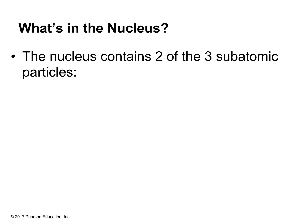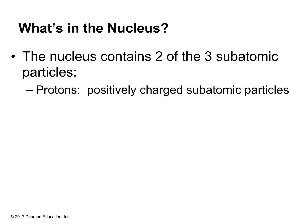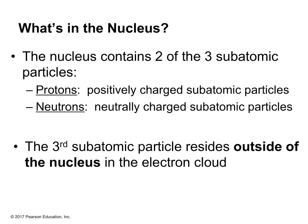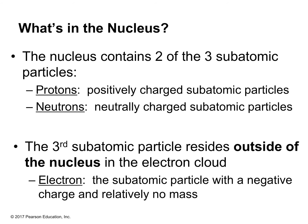What's in the nucleus? We have two of the three subatomic particles: protons, which are positively charged, and neutrons, which are neutrally charged. That third subatomic particle is outside the nucleus in the electron cloud — that is the electron. The electron has a negative charge and essentially no mass. We treat electrons like they have no mass because they are so, so small compared to protons and neutrons.